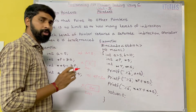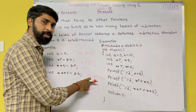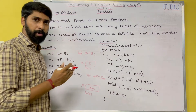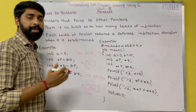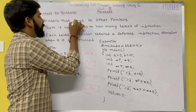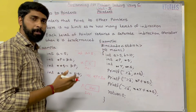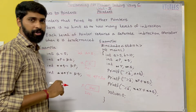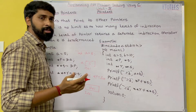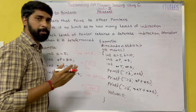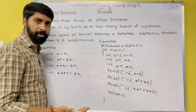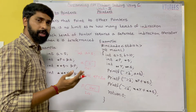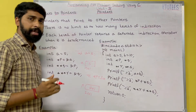So what is a pointer? The pointer `p` is used to hold the address of another variable. Now we are going to see pointer to pointer. Pointer to pointer means which holds the address of another pointer variable — so the pointer holds the address of a normal variable, while pointer to pointer holds the address of another pointer variable. There is no limit as to how many levels of indirection.